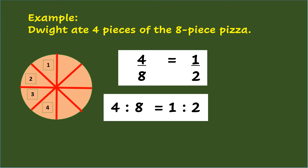Using the pictorial model, you can see that 4 parts of the 8 equal parts show half of the total parts. Therefore, the ratios 4/8 and 1/2 are equal ratios, and so are 4 is to 8 and 1 is to 2. These ratios are equal, so we call them a proportion.